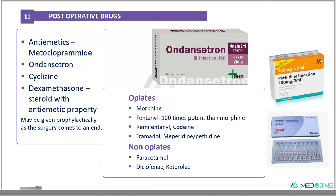In the management of pain, we use opiates and non-opiates. In opiates we use morphine, fentanyl, remifentanil, codeine, tramadol, meperidine, and pethidine. Of importance, fentanyl is 100 times more potent than morphine. We can also opt to use non-opiates, for example paracetamol or acetaminophen infusion, ketorolac, or diclofenac.